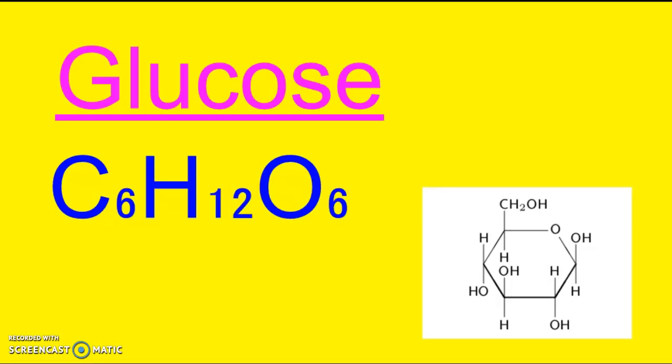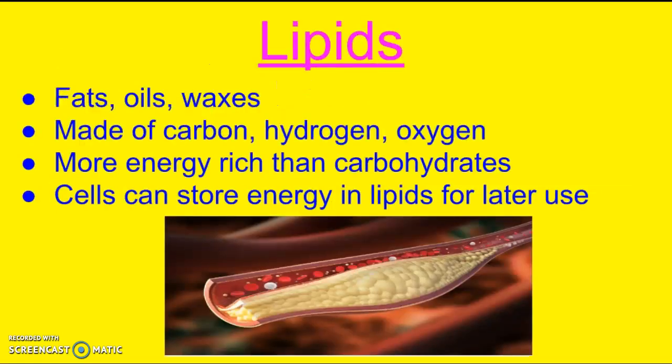Glucose is really important for energy, as we'll find out later on. The next group is lipids — those are your fats, oils, and waxes. They're also made of carbon, hydrogen, and oxygen, and they actually have more energy than carbohydrates do. Cells can store their energy in lipids for later use. An example would be bears who hibernate — they store all their energy in their fat, and that's what they live on during the winter.